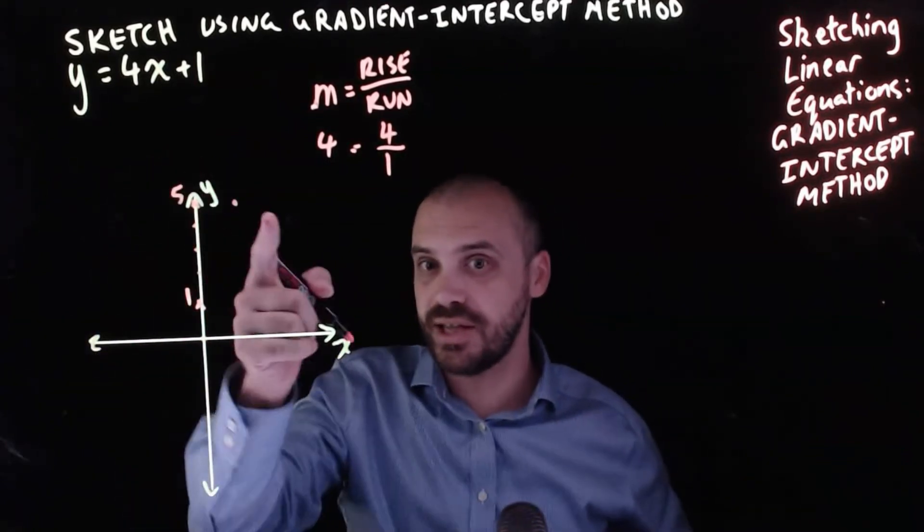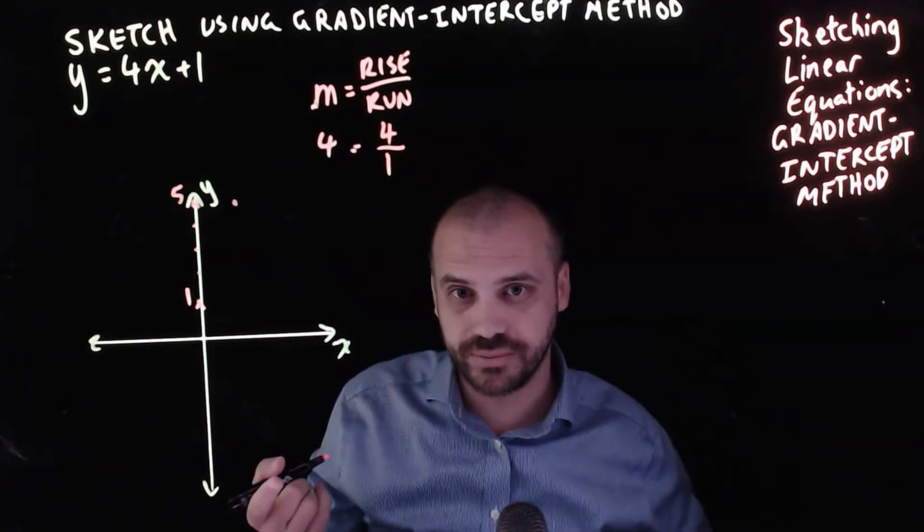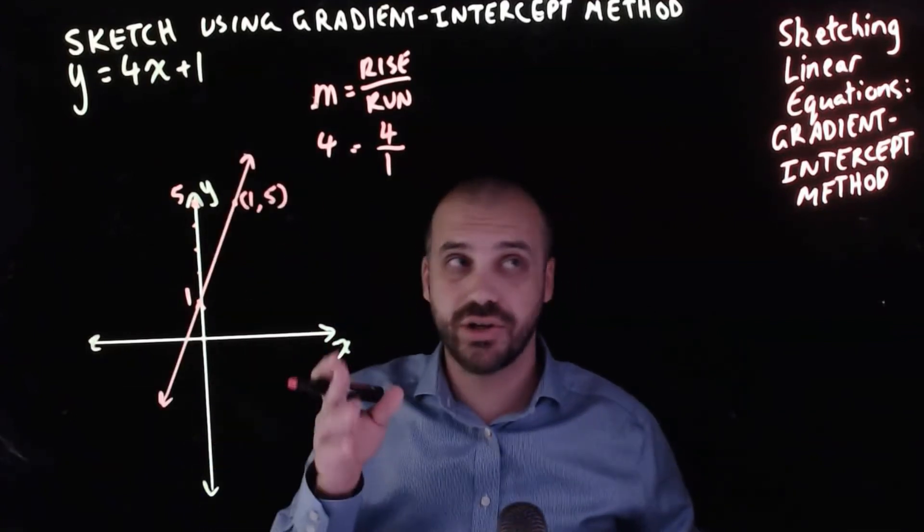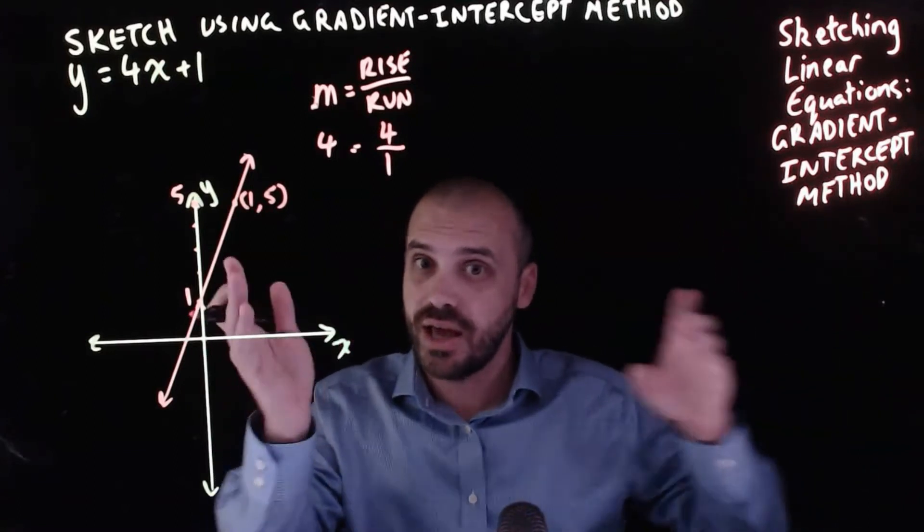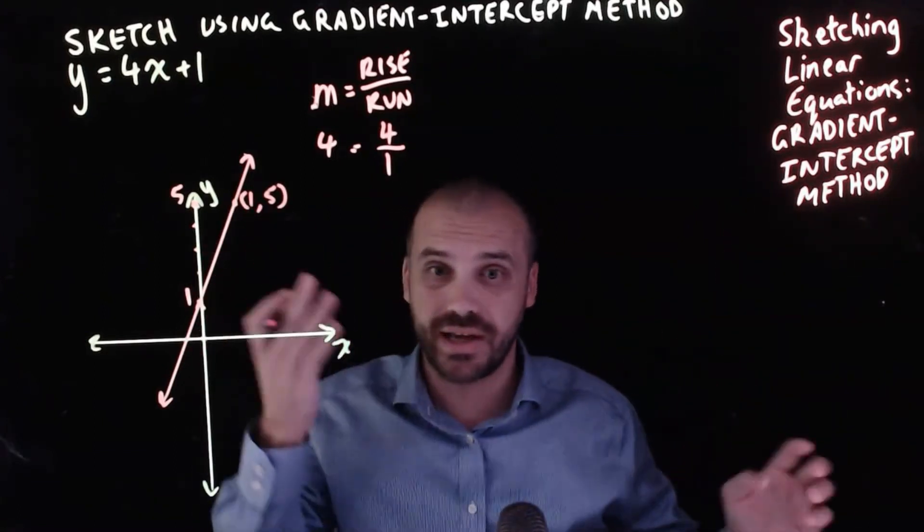And now I have a second point that I can draw a line through. So that's it. I've sketched this line using the gradient intercept method. Find the intercept and then use the gradient to find a second point.